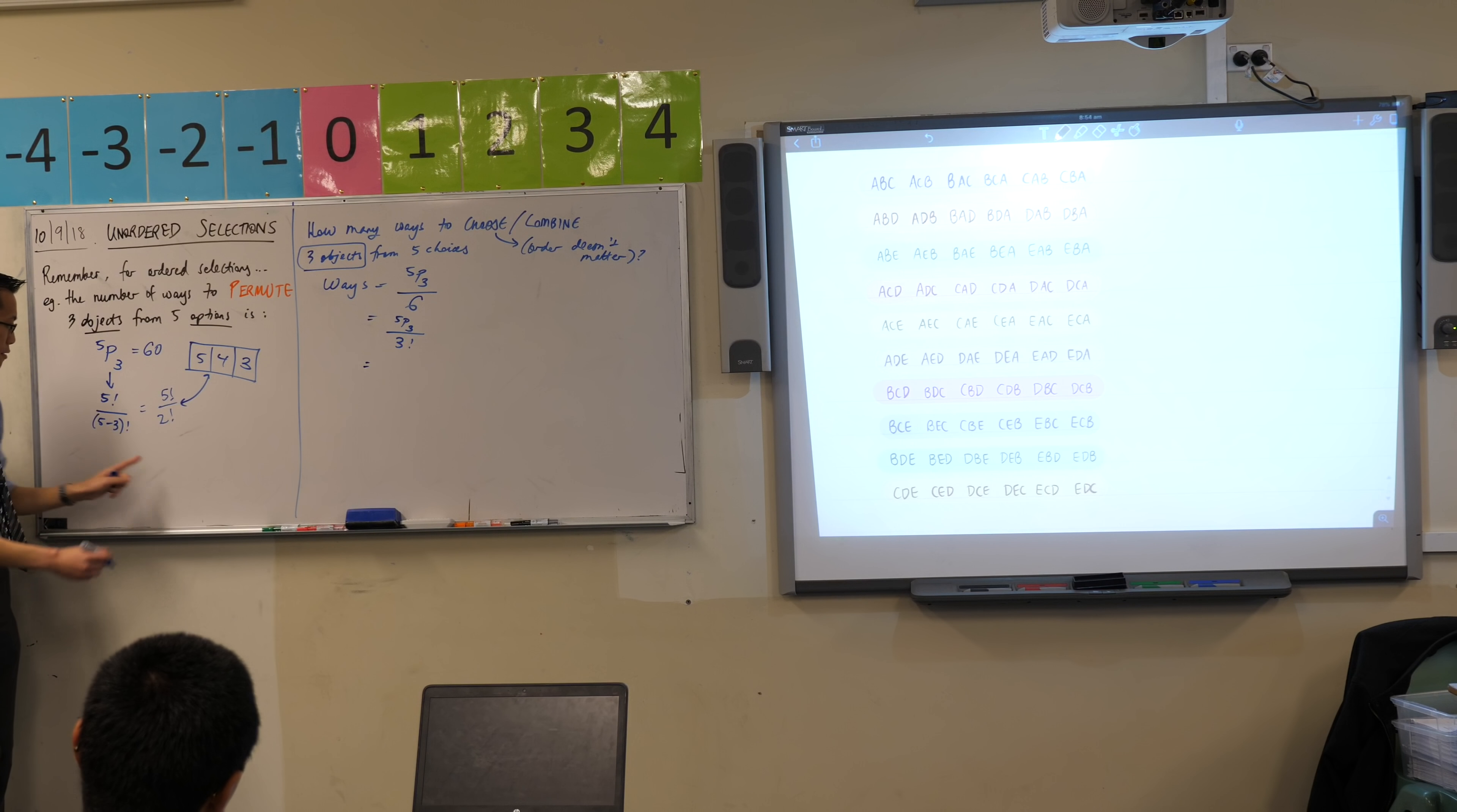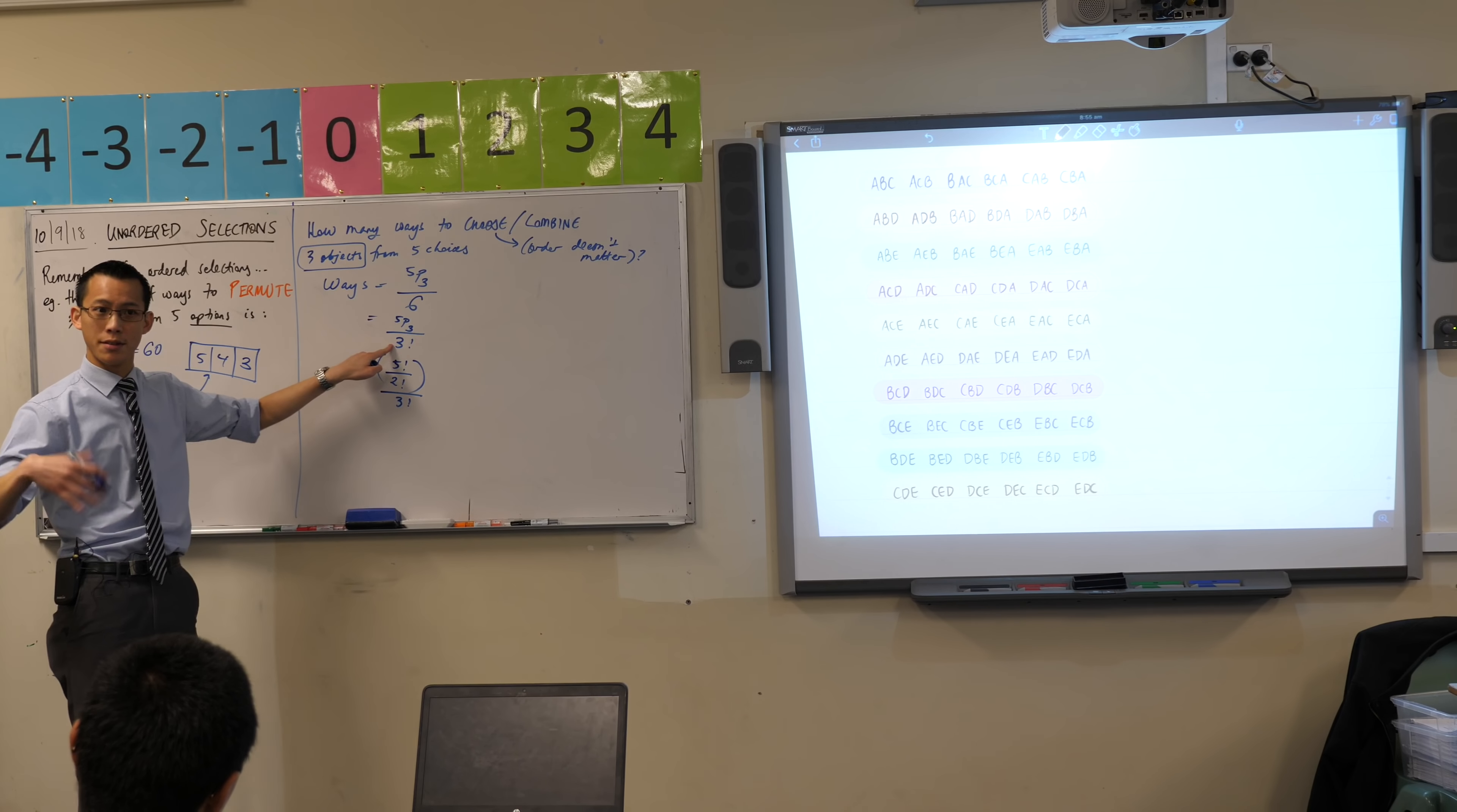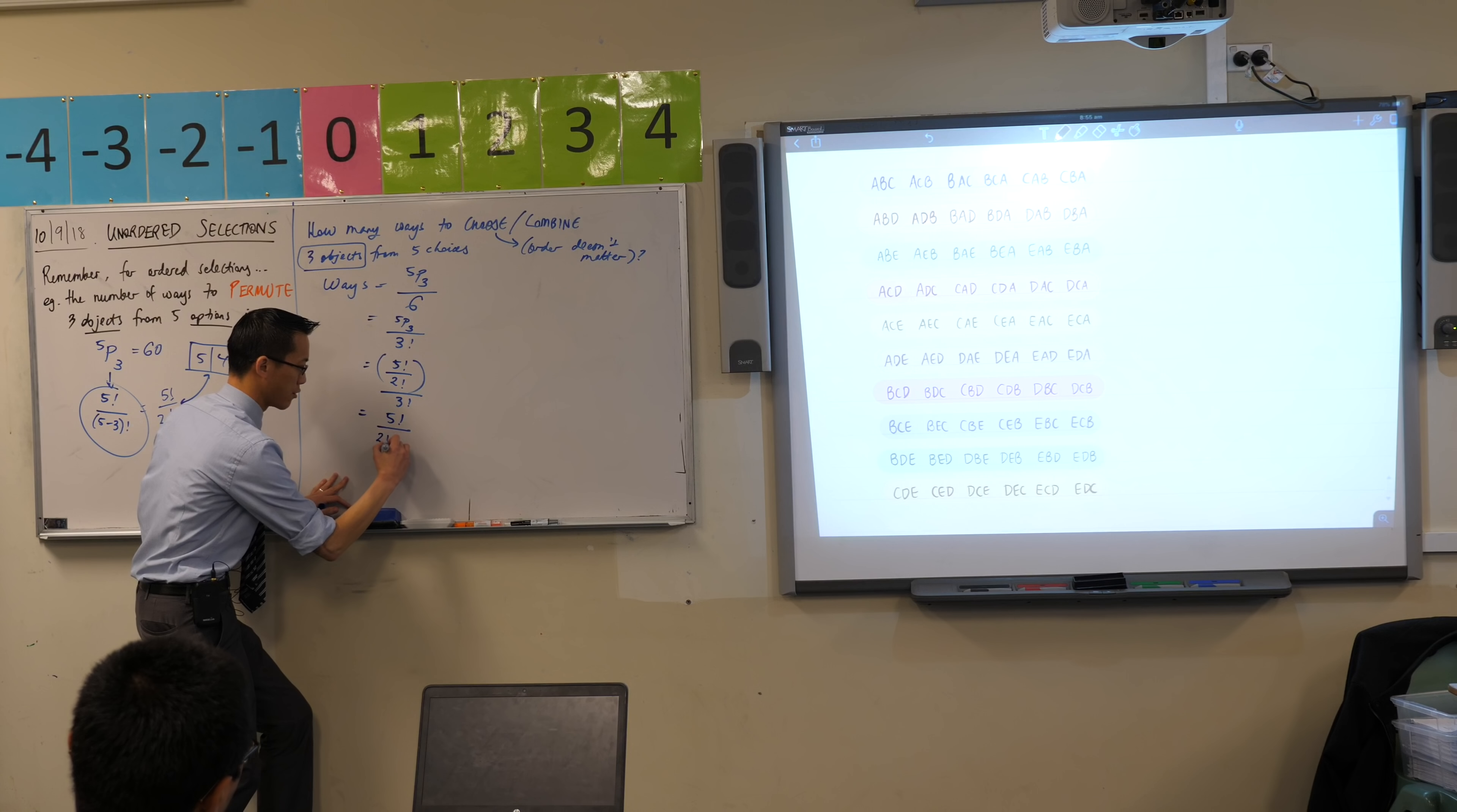Now if we take this guy and remember that it's actually shorthand for this factorial stuff, let's see what happens when I put this into, like when I actually expand out my 5P3, because that's just an abbreviation. I've got 5 factorial on 2 factorial, that's the top, divided by 3 factorial from us fixing up the overcounting. But fractions are fractions, that's a bit gross, isn't it? Let's fix this up and just create one fraction. That 5 factorial will still be on the numerator, and on the denominator, what will I have? 2 factorial times 3 factorial.